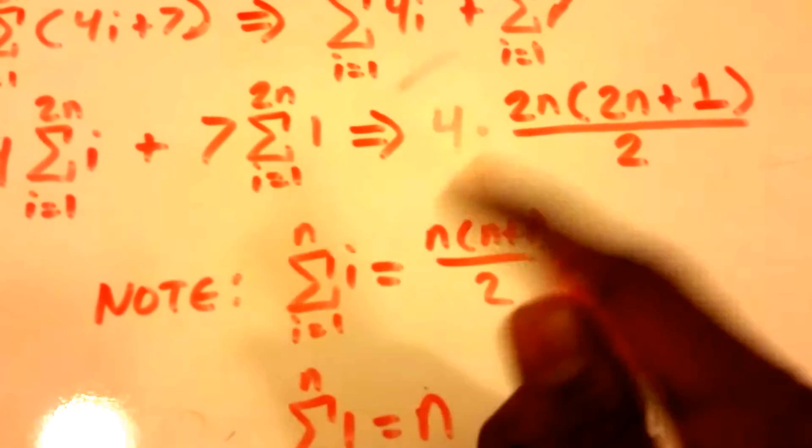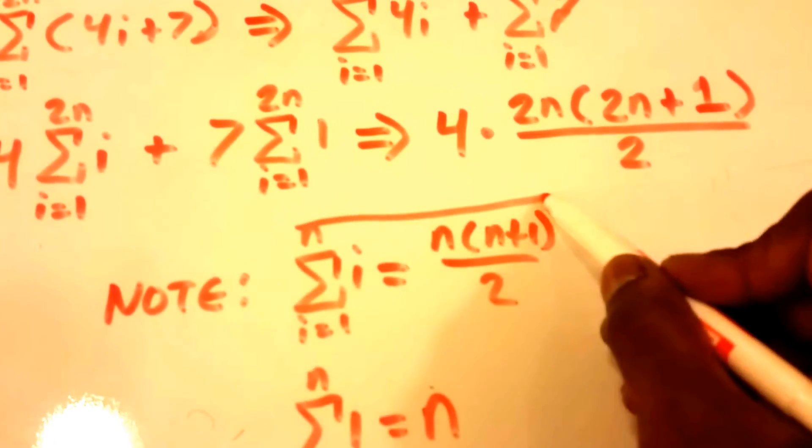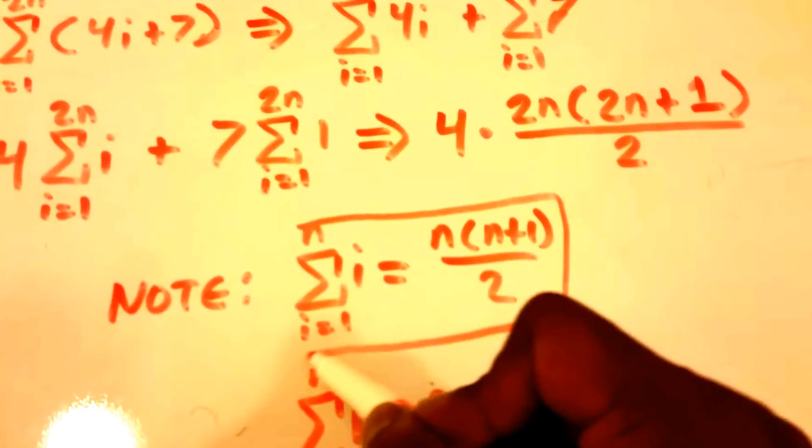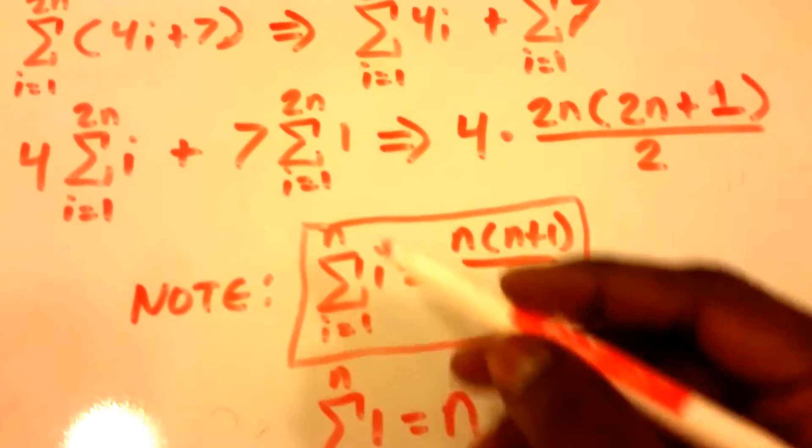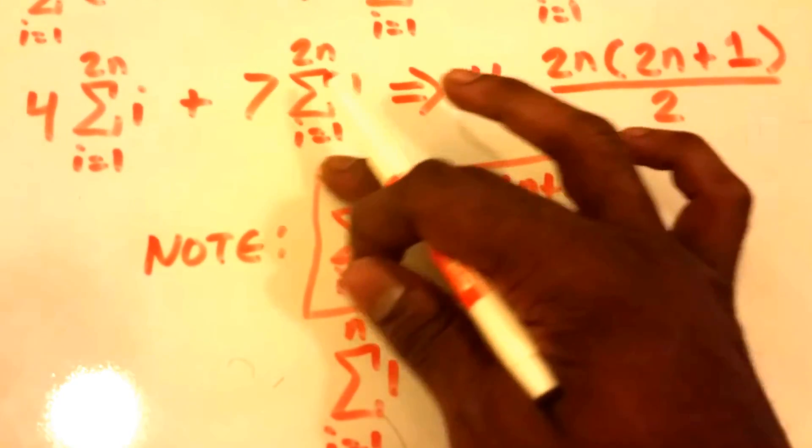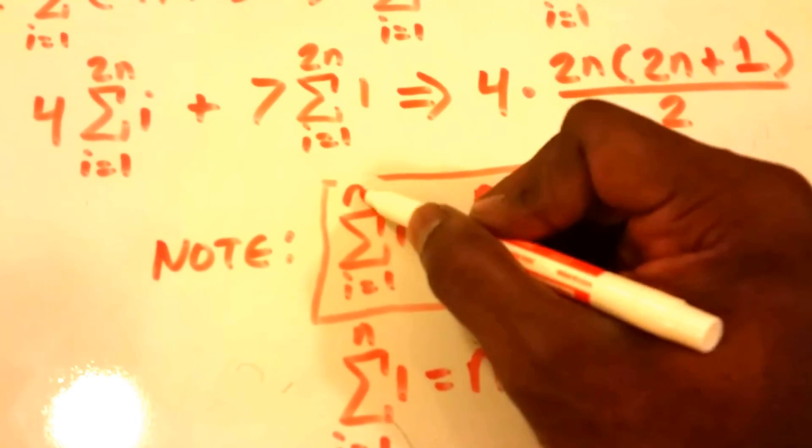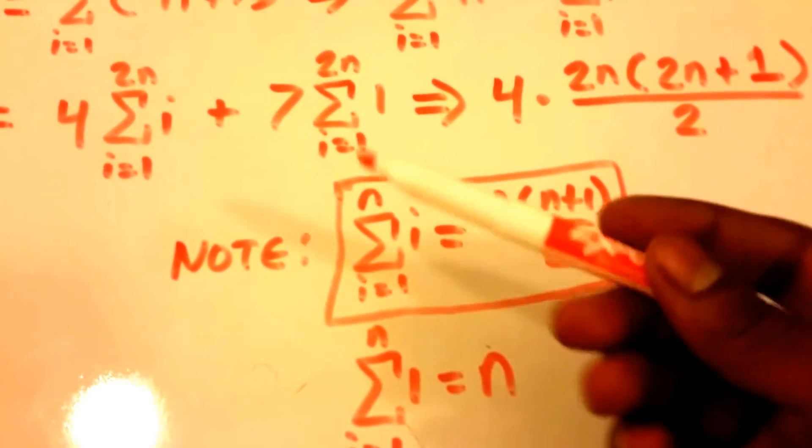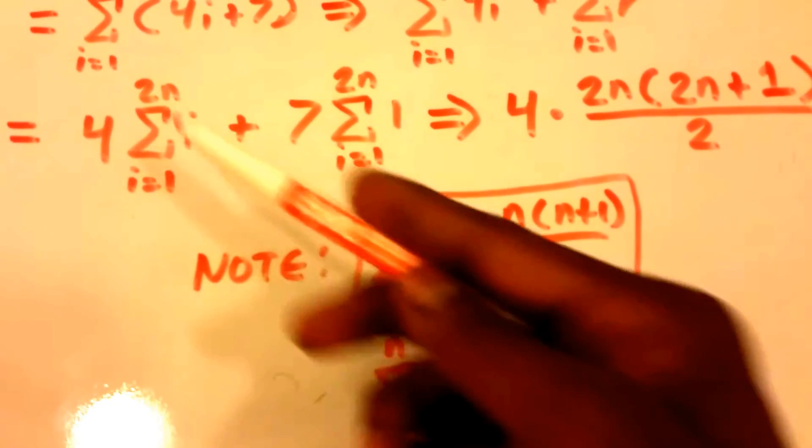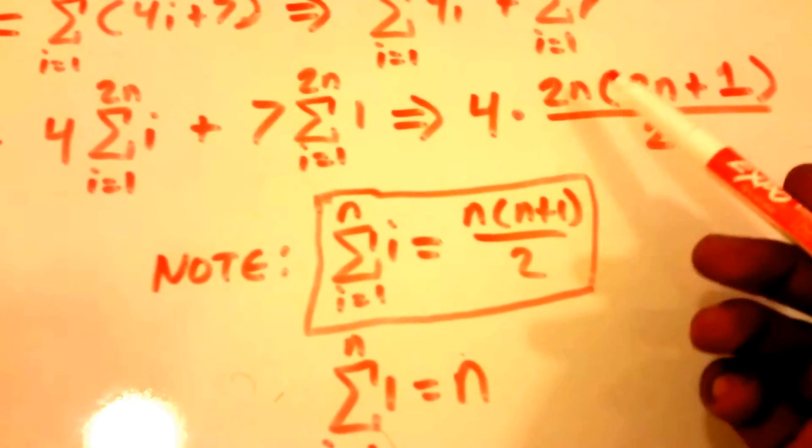And I get that from this formula right here. All I did was substitute 2 times n for n here. Okay, and that's how we got that equation.